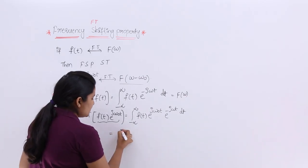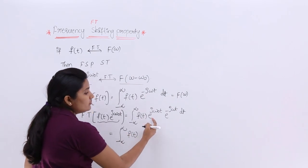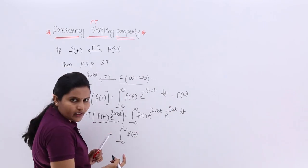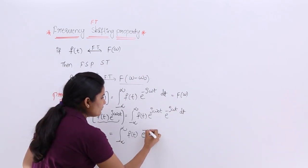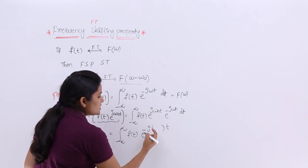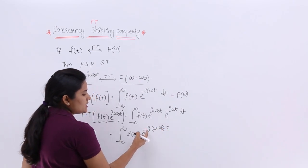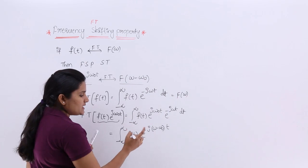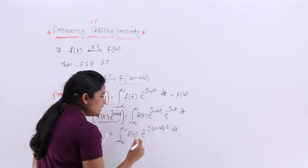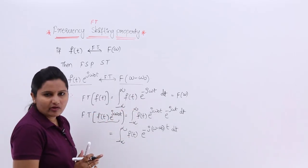This is equivalent to the integral from minus infinity to infinity of f(t). You can observe e^(jω₀t)·e^(-jωt). You can take e^(-jt) common, and you will get e^(-j(ω - ω₀)t). So you get: minus infinity to infinity of f(t)·e^(-j(ω - ω₀)t) dt.